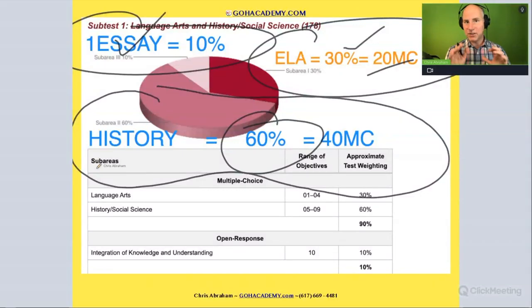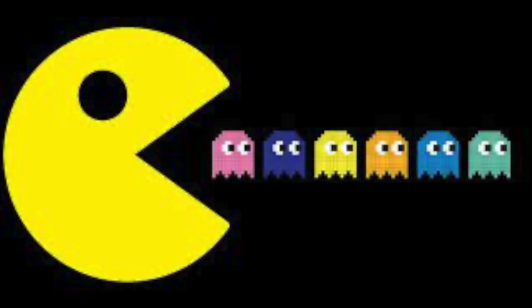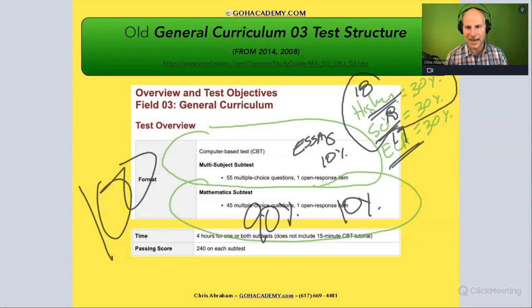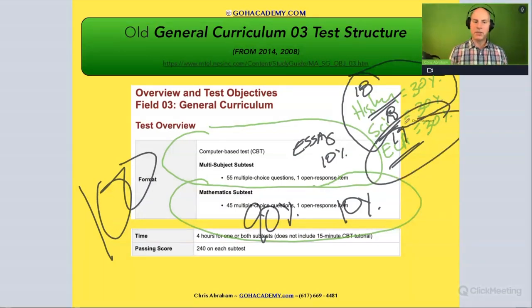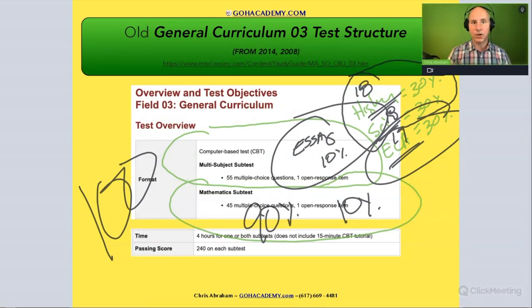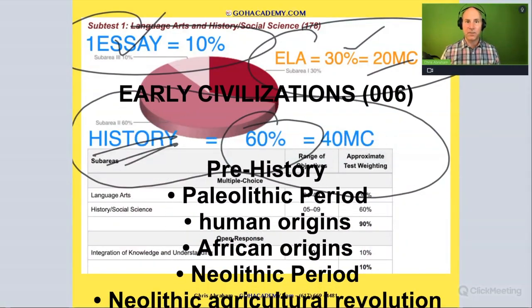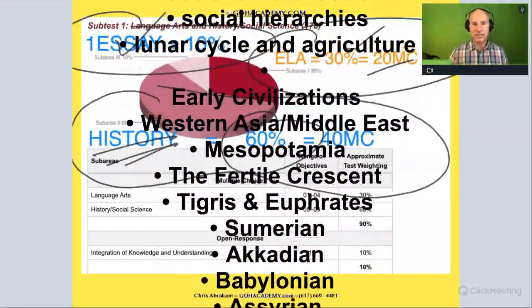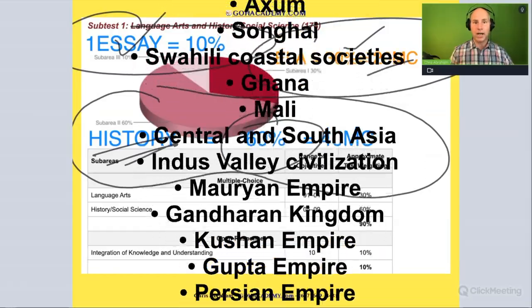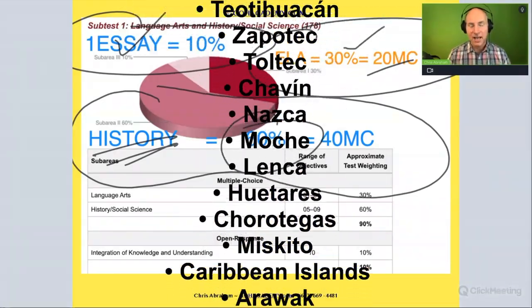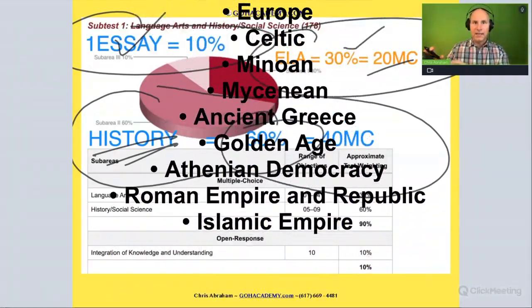Basically what they've done in this new test is allow history to swallow the science section. They've added a few more questions and history is gobbling up the science portion of the exam. ELA will still be 30 percent, there will still be an essay worth 10 percent, and now there will be over double the amount of history questions. Just look at some of these ideas on the page — for just the first objective on ancient civilizations, look at all these terms. A lot of these ideas were non-existent in the previous exam, and most you'll never see on your test, but studying them will take up a lot of your time.